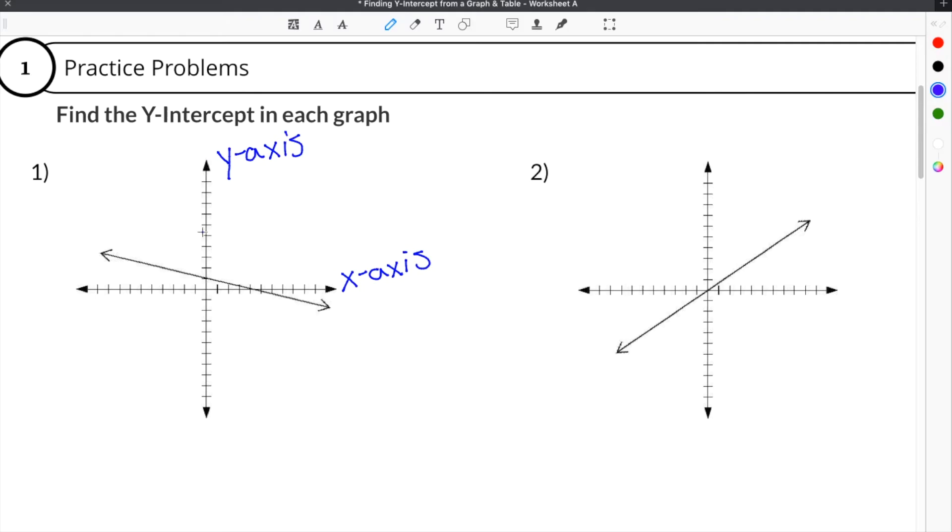So the y-axis is always the vertical axis, and the x-axis is always the horizontal axis. What you are looking for is the spot where your line crosses the y-axis. So you are trying to find exactly where your linear equation will cross the y-axis.